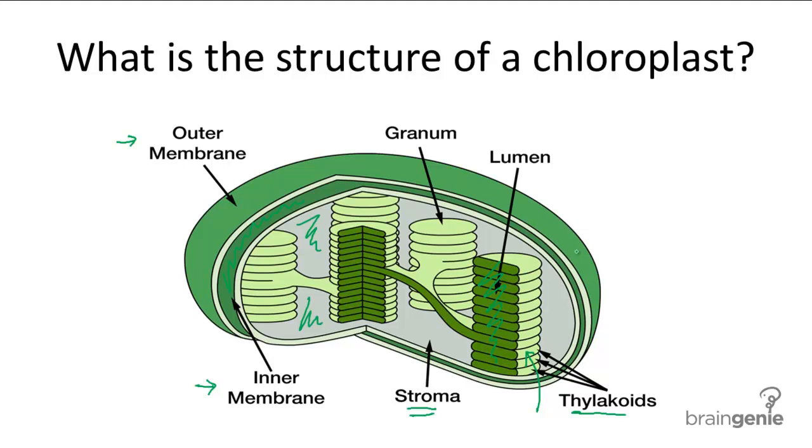Multiple thylakoids stacked on top of each other form grana, or singular granum. So the thylakoid membranes are the site of light reactions, whereas the stroma is the site for the dark reactions.